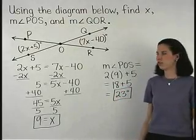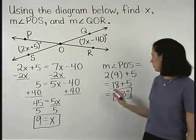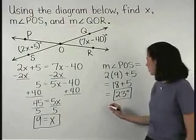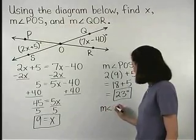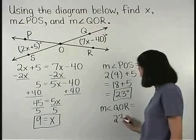To find the measure of angle QOR, remember that it's equal to the measure of angle POS. So the measure of angle QOR is also 23 degrees.